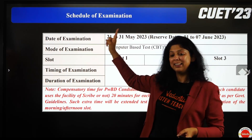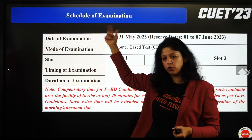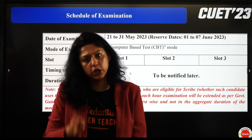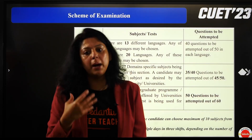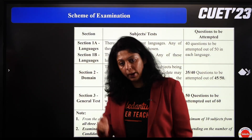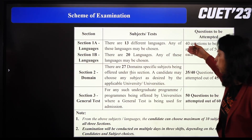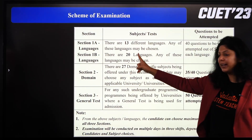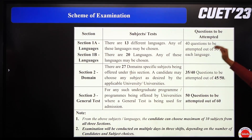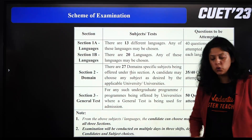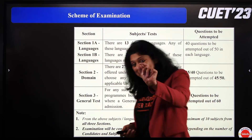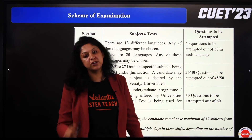Exam dates 21 to 31 tentatively हो सकती हैं, first to seven June भी हैं। तीन slots में आपका examination होगा — computer-based examination। When you fill your form, Section 1A languages का है, 1B languages का है — 13 languages में से choose करनी है, 20 languages में से choose करनी है, 40 questions attempt करने हैं 50 में से। Section 2 आपके domain subject का है, 27 domain subjects दिए गए हैं जिनमें से choose करने हैं, 35 out of 40 questions attempt करने हैं।